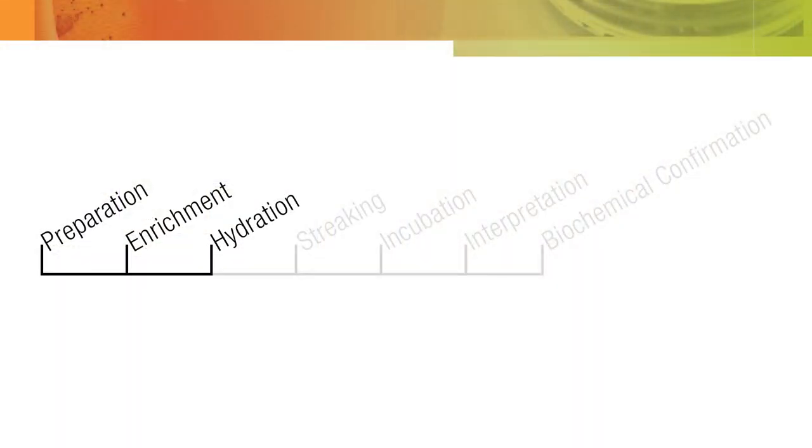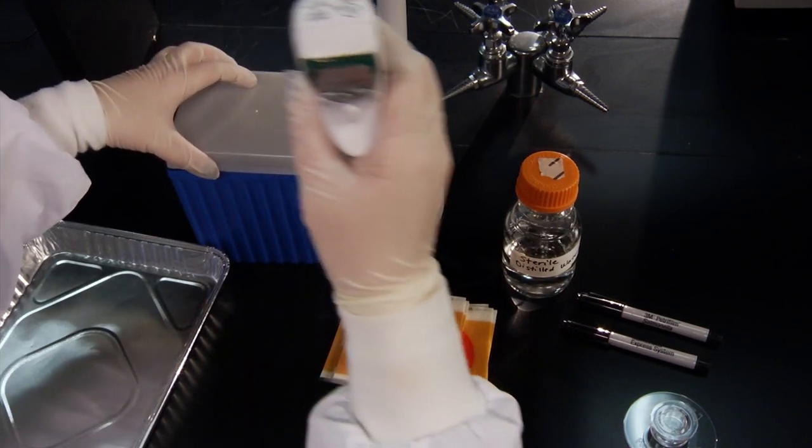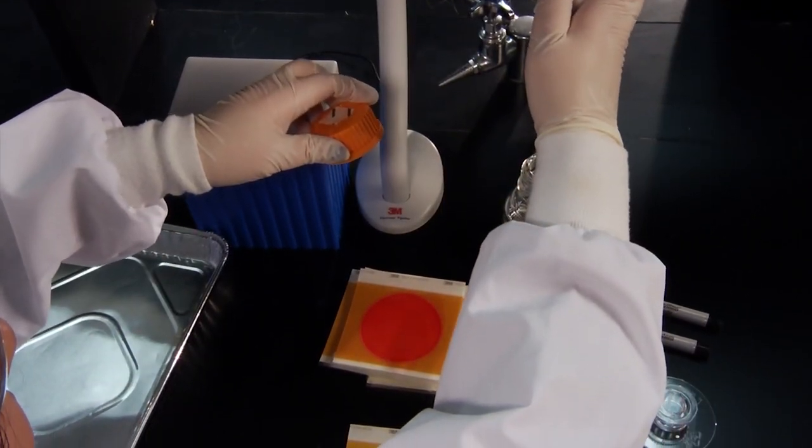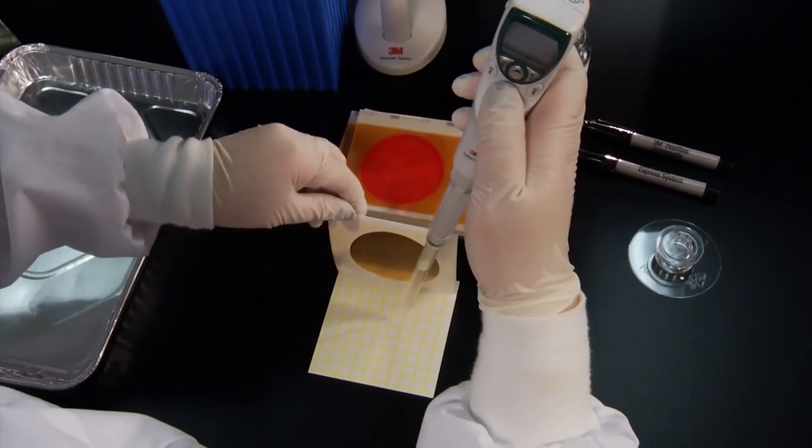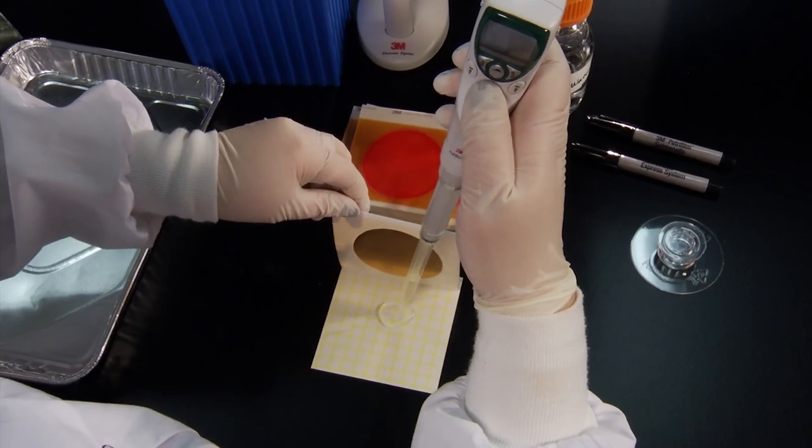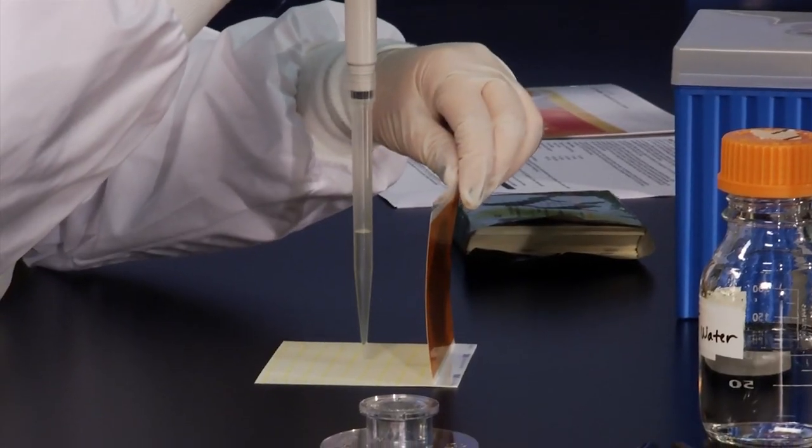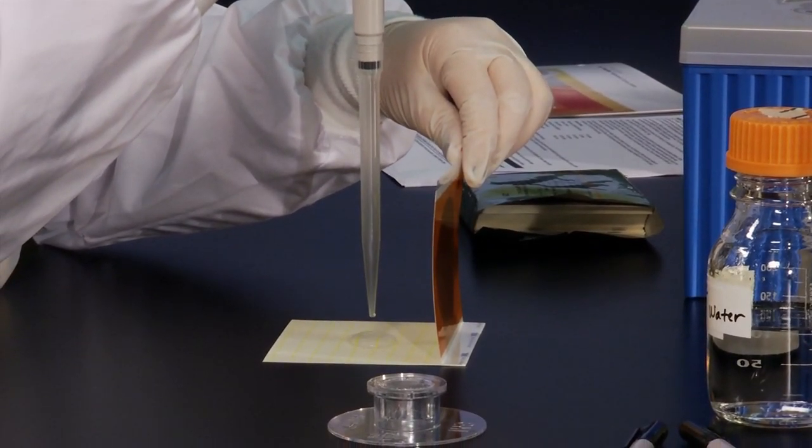The next step is the hydration procedure. To hydrate the 3M PetriFilm Salmonella Express Plate, place it on a flat level surface. Lift the top film and with the pipette held vertically, dispense 2.0 milliliters of the prescribed sterile diluent onto the center of the bottom film. Do not close the top film before dispensing the entire 2.0 milliliter volume.